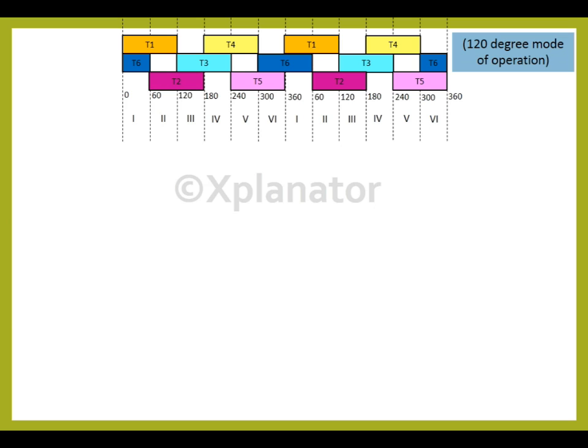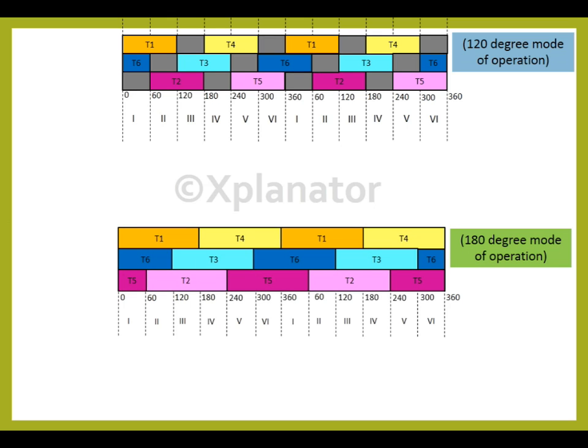The blank spaces in between the thyristors are the times where no thyristor conducts from the same leg. In comparison to 180 degree mode of operation, it is seen that in 120 degree mode of operation, there exists a 60 degree interval between turning OFF one device and turning ON the complementary device in the same leg. This provides sufficient time for commutation.